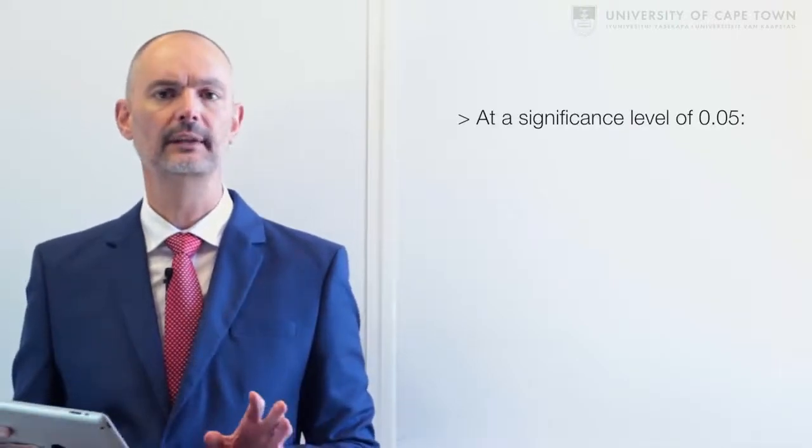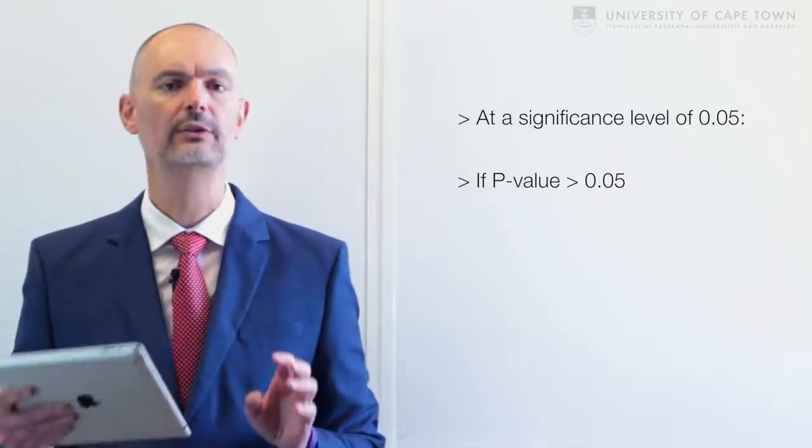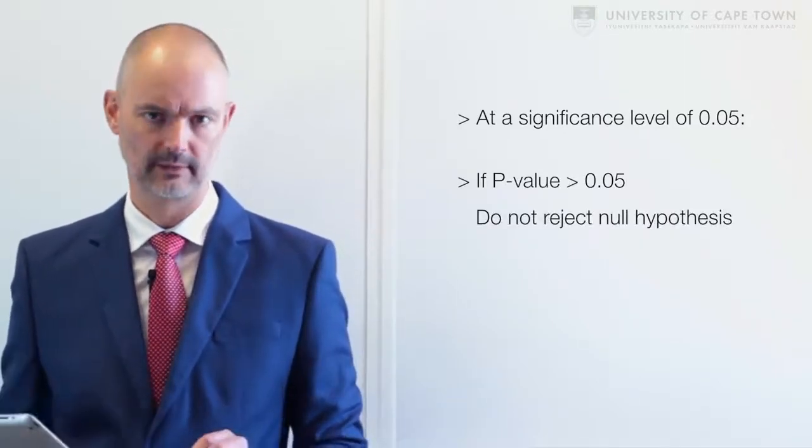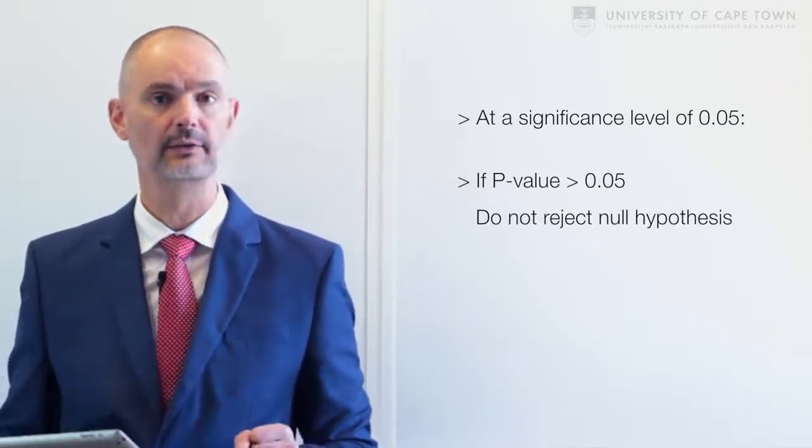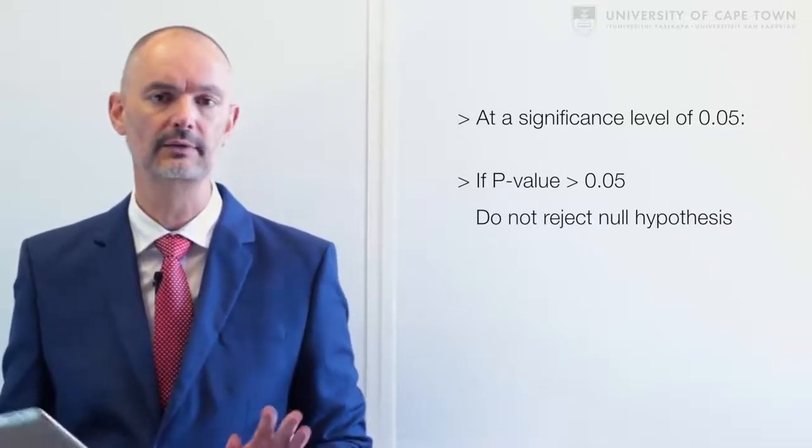Now the short explanation of this. If we have a significance level of say 0.05, if we find a p-value of larger than 0.05, we do not reject the null hypothesis. You never accept the null hypothesis. You can't prove it. You just do not reject the null hypothesis. So your statement of neutrality stands.